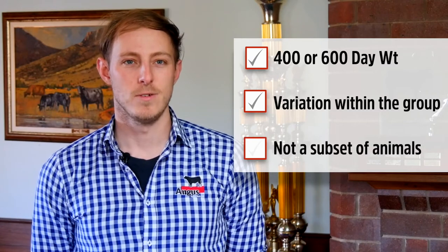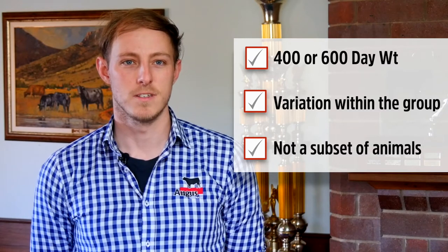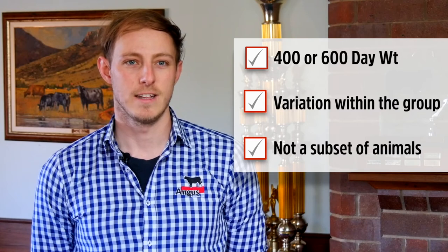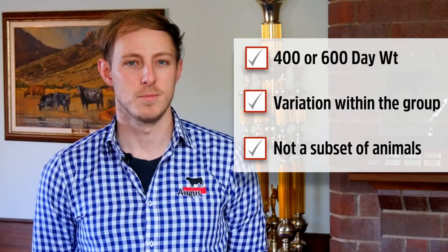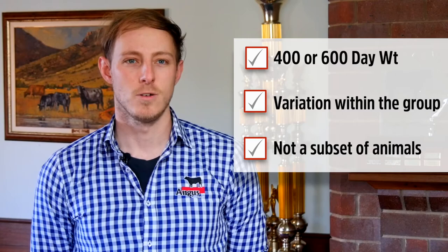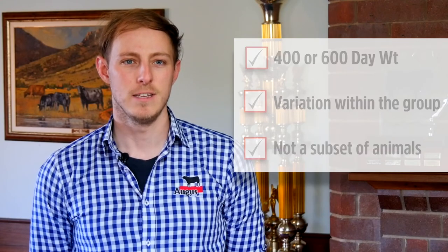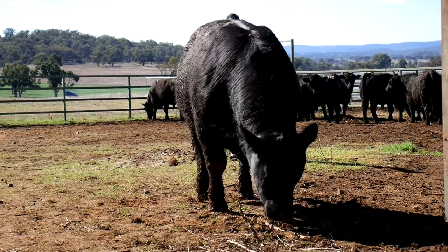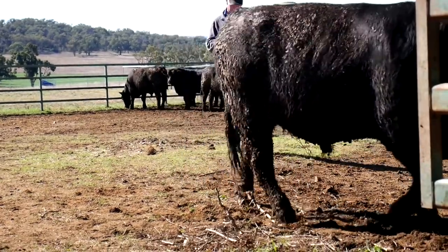Finally, we need to ensure we have management groups of sufficient size, which is about ensuring we collect scores on as many animals as possible and avoid only scoring a subset of animals. The best example of this is avoiding scoring only the sale bulls rather than the entire bull drop.